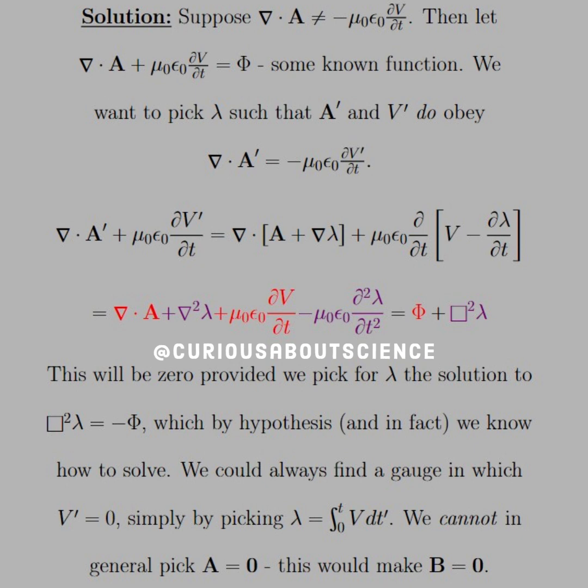And then, let's put everything in red. We'll start color coding again. Once we distribute the divergence into A and into lambda, we get divergence A in red plus the Laplacian of lambda in purple.